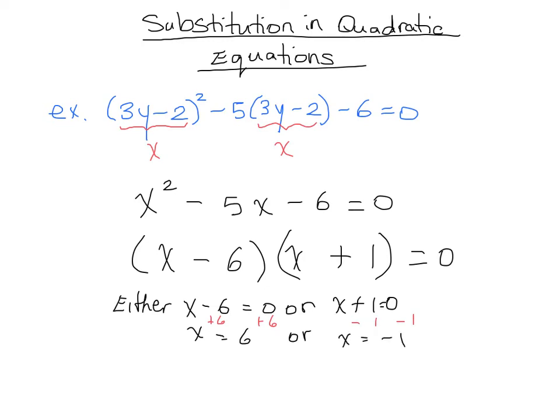But again, we're not done. Remember, initially we created a relationship that 3y minus 2 is x, but the equation originally wanted us to find y. There was no x, we created that. So in order to finish this question, we have to figure out what y is. But since we know that 3y minus 2 is x, and we now know that x is either 6 or negative 1, we can solve.